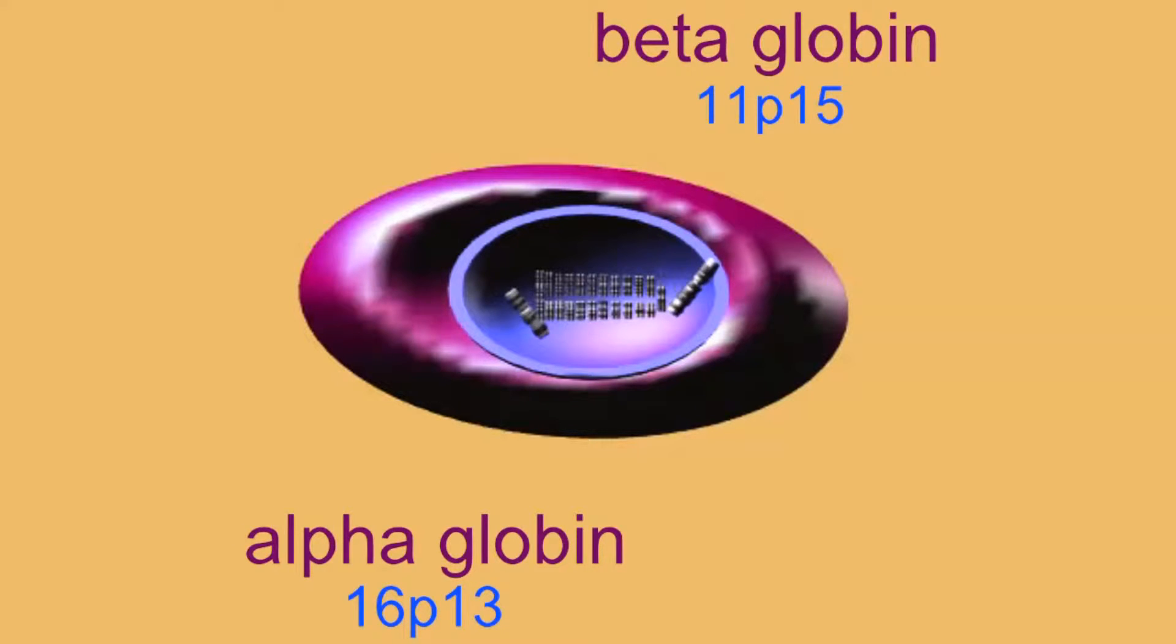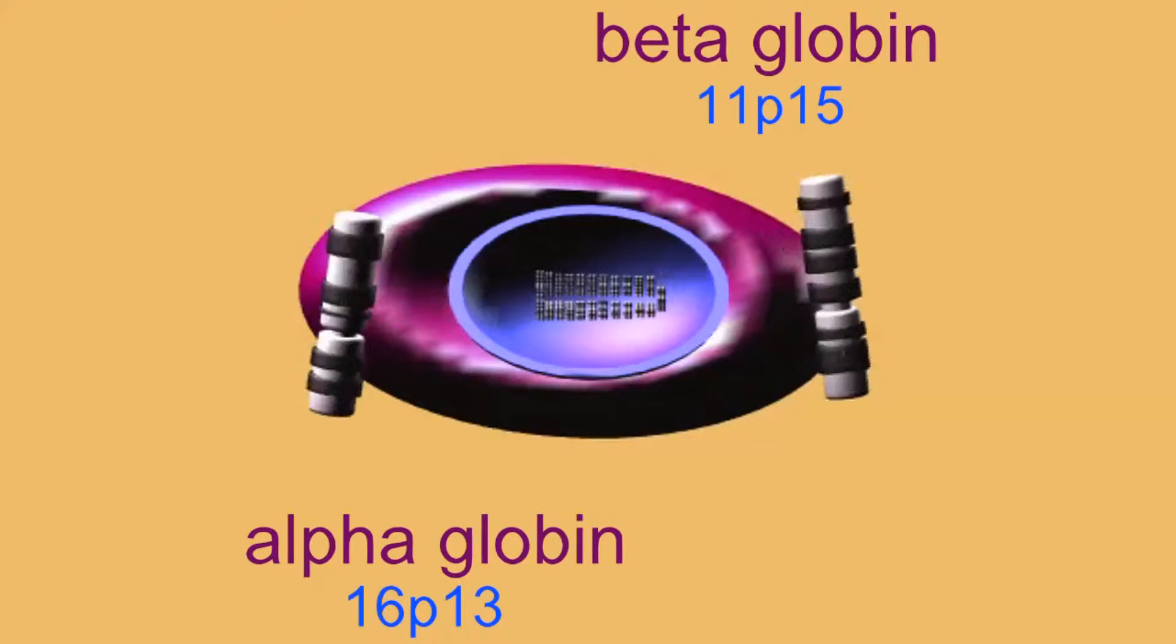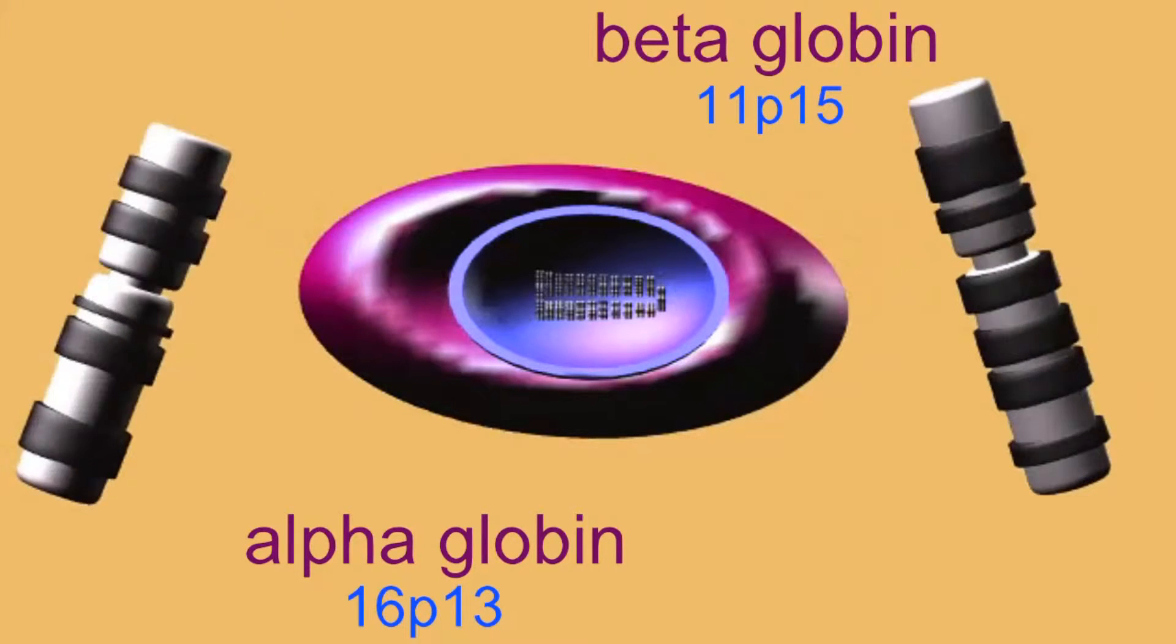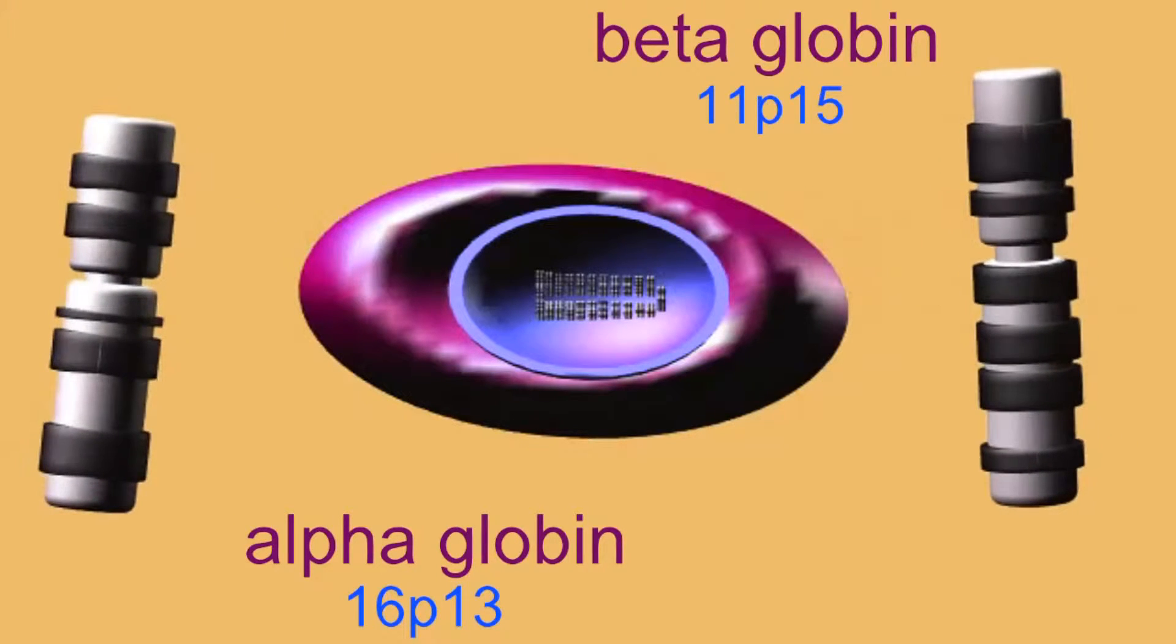Two of the four globin chains in adult hemoglobin are the alpha globin chains, whose gene is located in a cluster on chromosome 16p13.